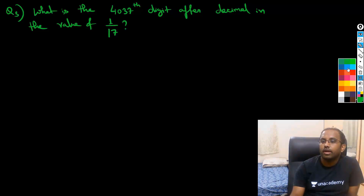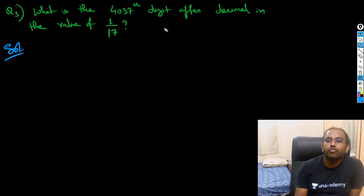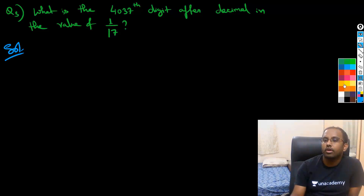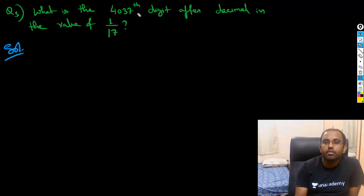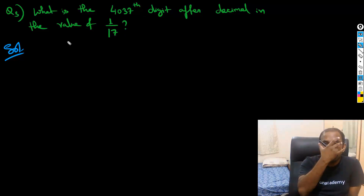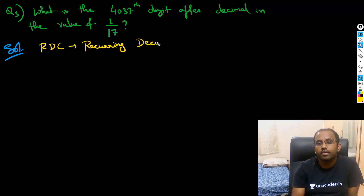So once I look at this, what I can sense from here is I want the 4037th digit. This is a problem of RDC — that is, Recurring Decimal Cyclicity.